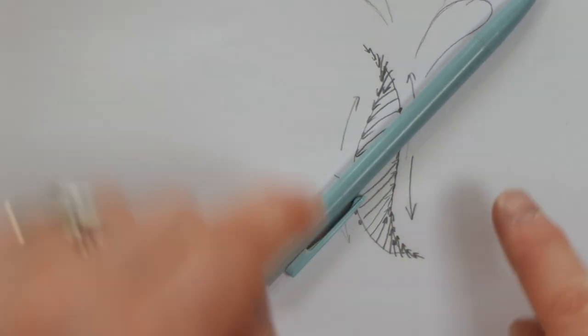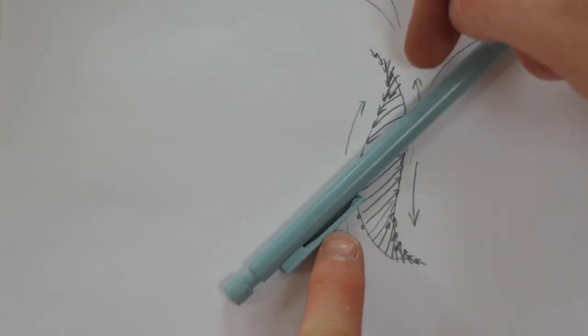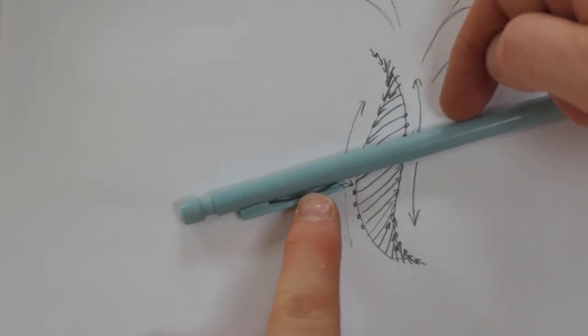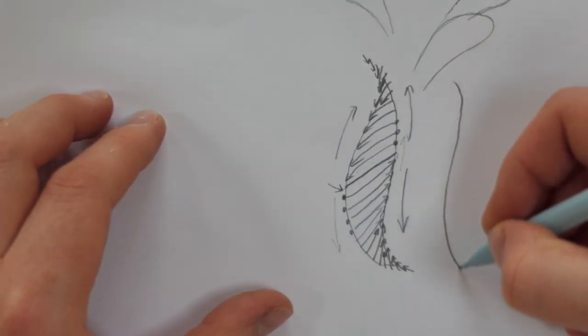If we reverse that and change the direction of working and press on this end and this end, you can see very quickly that the angle will flatten and that would result in this kind of effect.